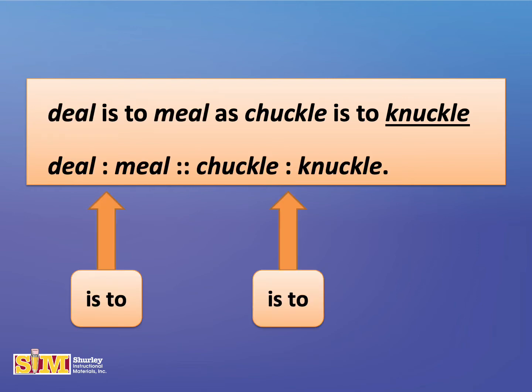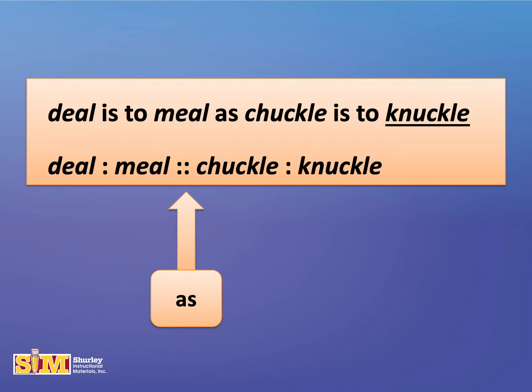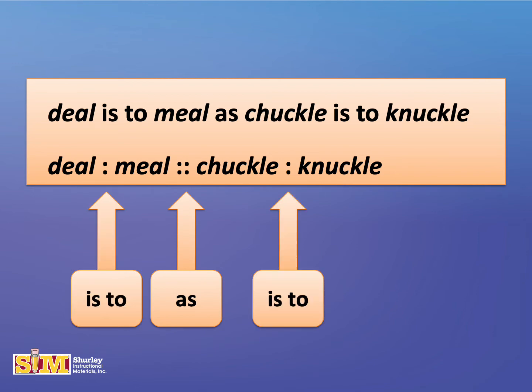To make analogies shorter, they are often written like this. The colon symbol in an analogy means "is to," and the double colon symbol means "as." When you read the analogy aloud, you should read the symbols as if they were words. Say: deal is to meal as chuckle is to knuckle. This method lets you look only at the important words in the analogy.